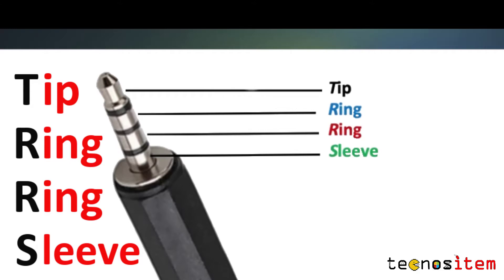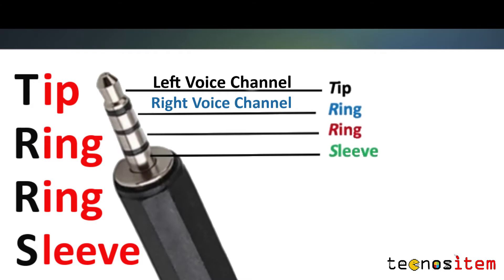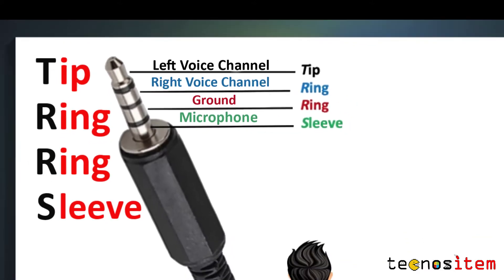Tip — the end part — is the left voice channel. Ring — the metal part below it — is the right voice channel. Ring — the metal part next to it — is the ground. And the sleeve, the last metal part, serves as the microphone.